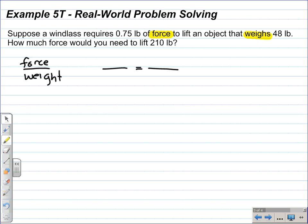That will help me set up my proportion. Now, this is what I call the skeleton of my proportion, the ratio on the left, the equal sign, the ratio on the right. And the left ratio I get from the first sentence that we have 0.75 pounds of force to 48 pounds of actual weight.